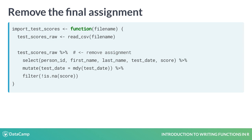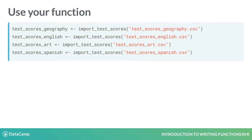Here, we drop the final assignment to testScoresClean. To use your function, you can just call it like you would any other function. Notice how each subject that you add only requires one more line of code, and if you need to change how the code is imported, you only need to change it in one place.